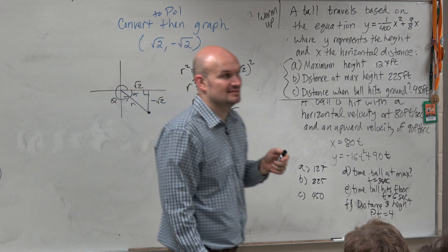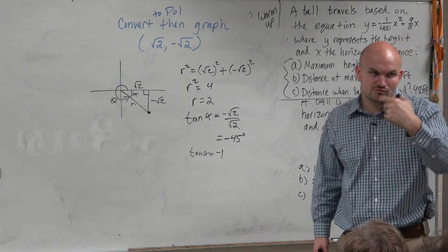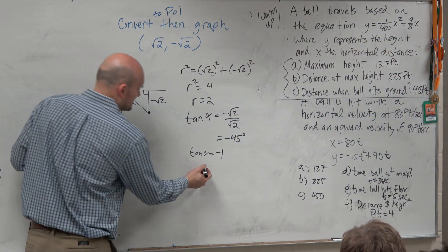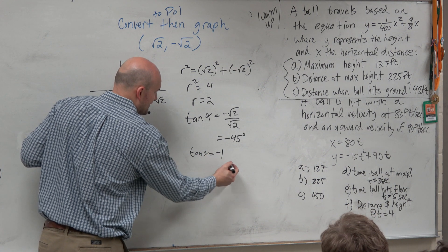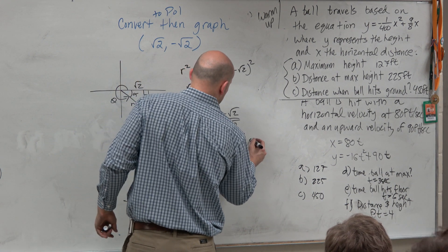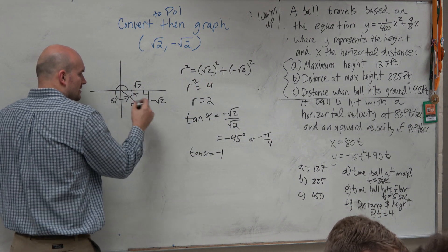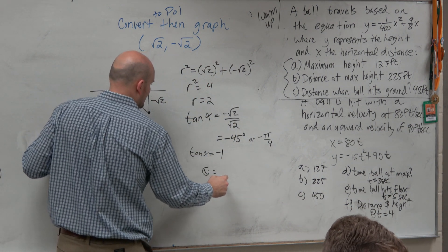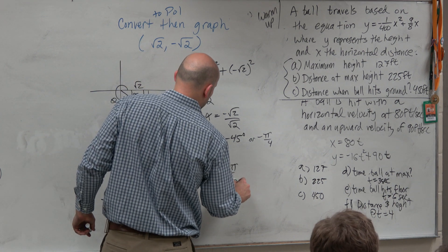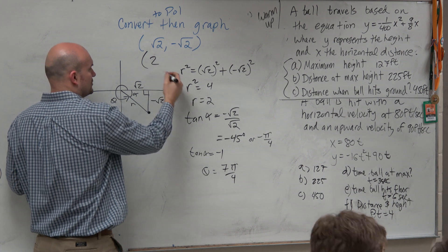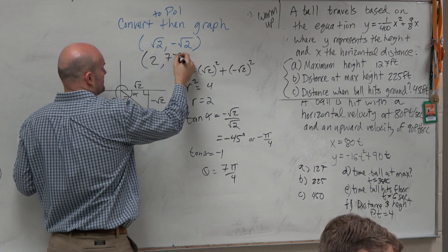Yeah, but do radians. 7 pi over 4. So, we can say, if alpha is negative pi over 4, so from here to here is pi over 4, then we know theta is 7 pi over 4. So now, can we convert this? Sure. Radius is 2. The angle is 7 pi over 4.